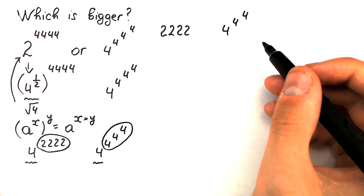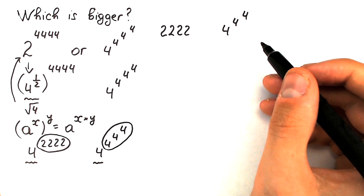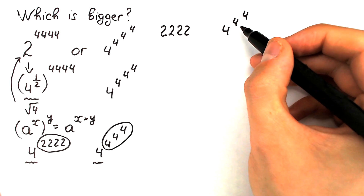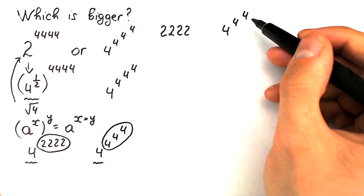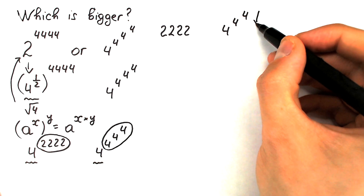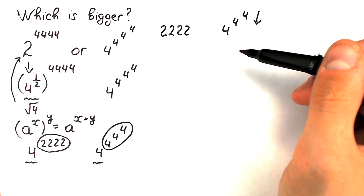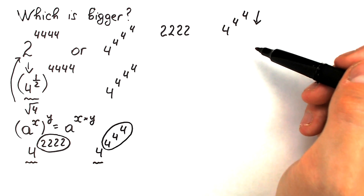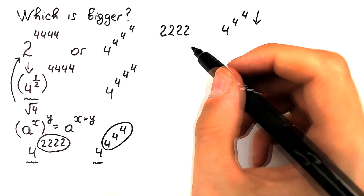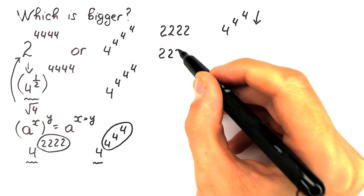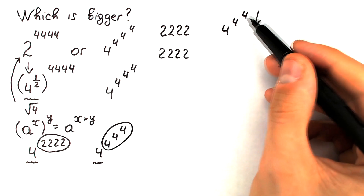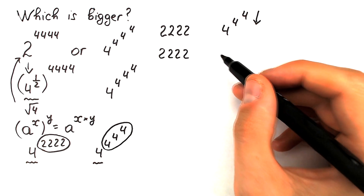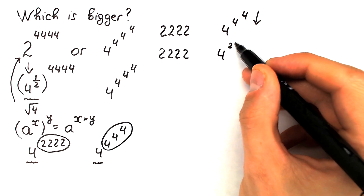Let's compare these two powers. I suggest first raising 4^4, evaluating from top to bottom — you cannot go bottom to top with power towers. So 4^4 = 256, which means the right-hand exponent is 4^256.